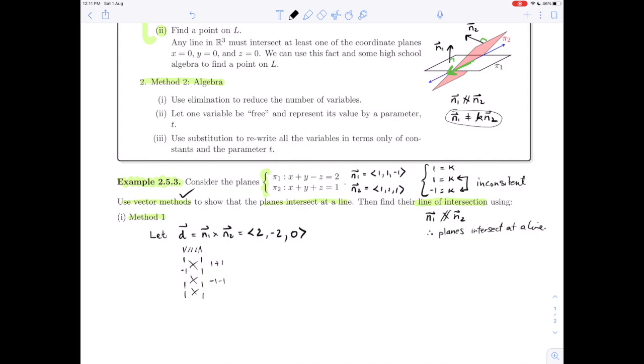That's not all that I need. Obviously, to give a line, we need to have a point on the line. We're going to use this logic: any line in three-dimensional space has to intersect at least one of the coordinate planes. So we can choose to either let x = 0, y = 0, or z = 0 to do some high school algebra to figure out a point on that line. I'm going to choose to let x = 0.